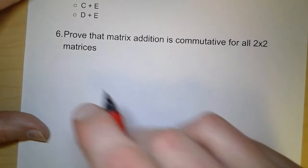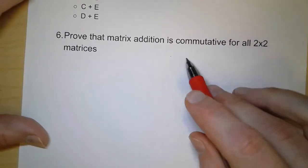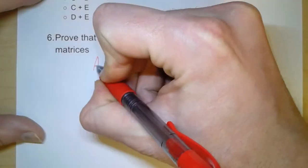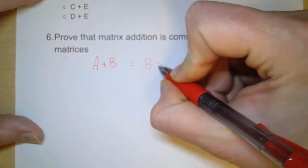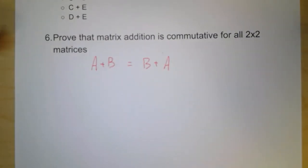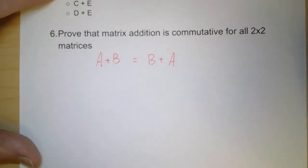Finally, here it says we want to prove that matrix addition is commutative for all two by two matrices. Now what is commutative? That means that it doesn't matter. So what we're saying here is that I can take A plus B, and that's equal to B plus A. Now we kind of take that for granted because it works for all numbers. So we would assume that it's true for all matrices. But matrices don't always work the way we think. So we're going to prove this.